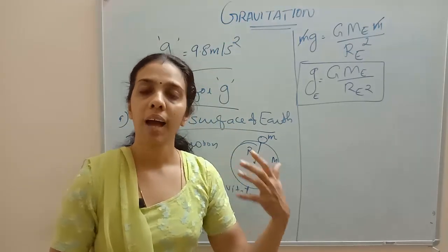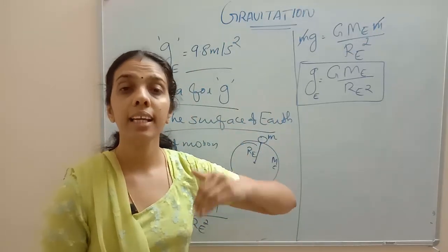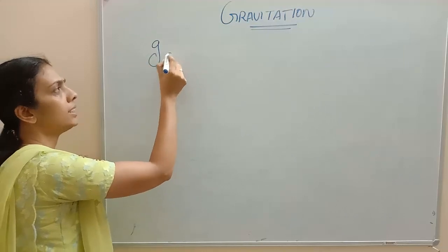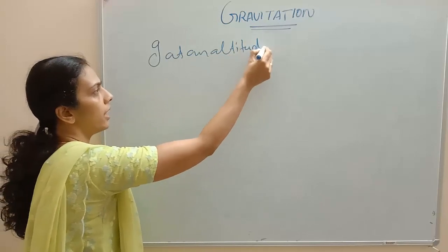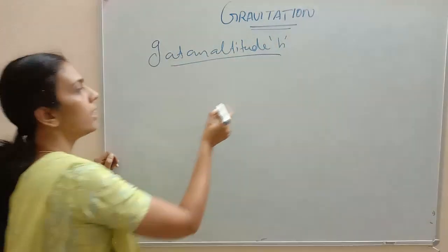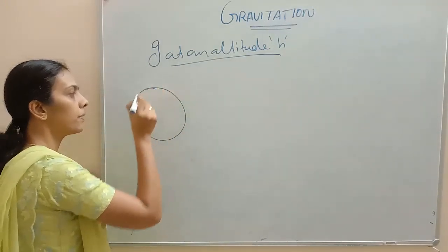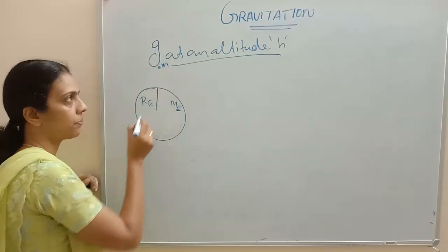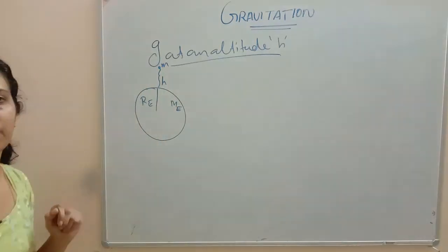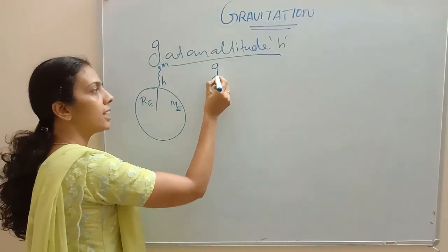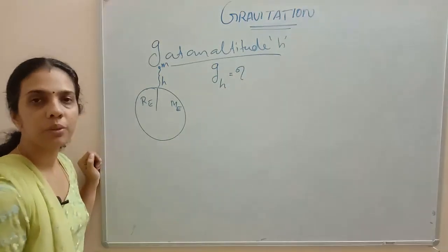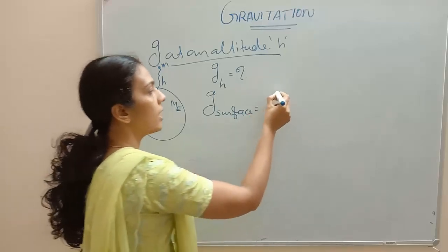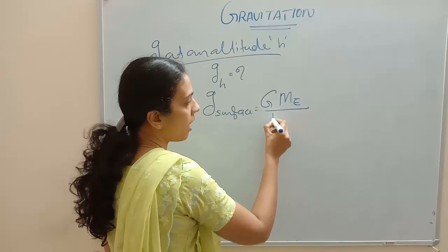Now we are going to find out what will be the value of g if we place an object at a height H from the surface of Earth — that is, acceleration due to gravity at an altitude H, or at a height H. I am considering Earth having mass M_E and radius R_E, and an object at a height H from the surface. We know g at the surface of Earth is G M_E divided by R_E squared, which we just derived.